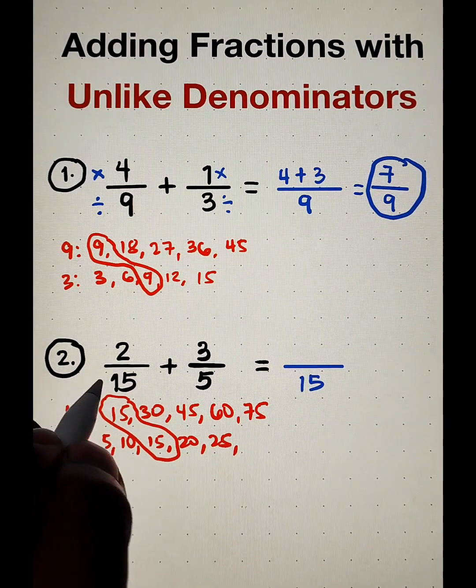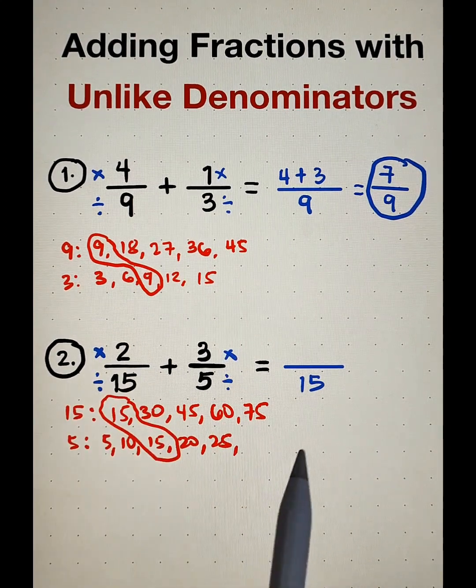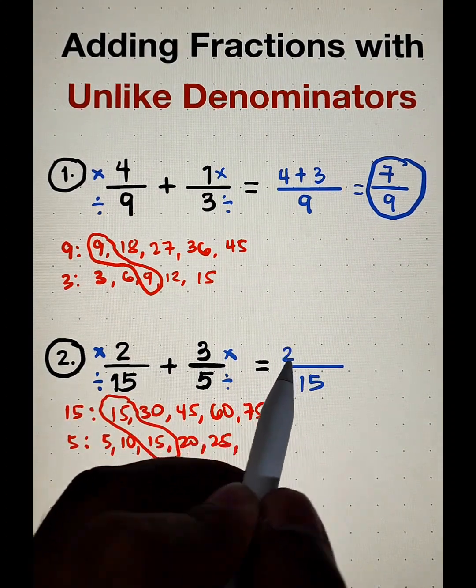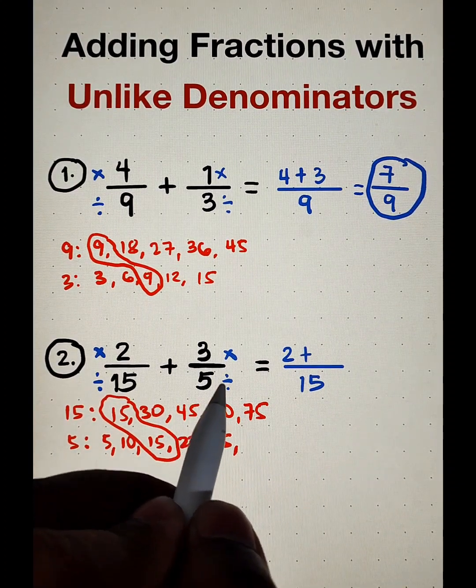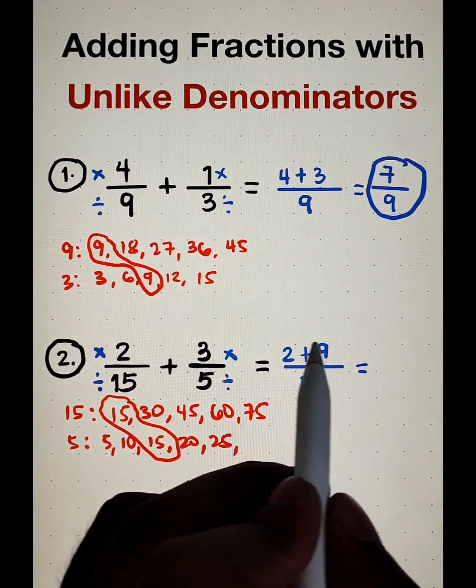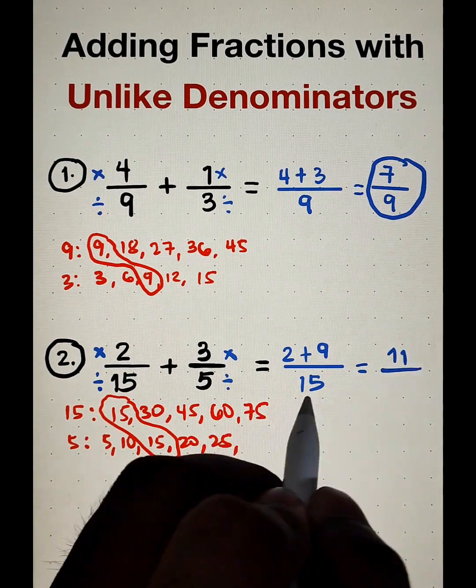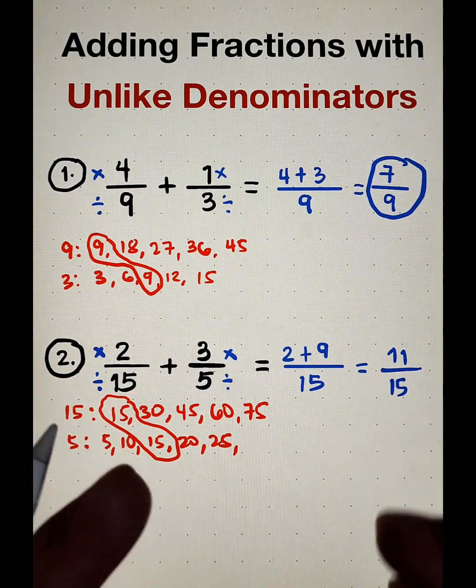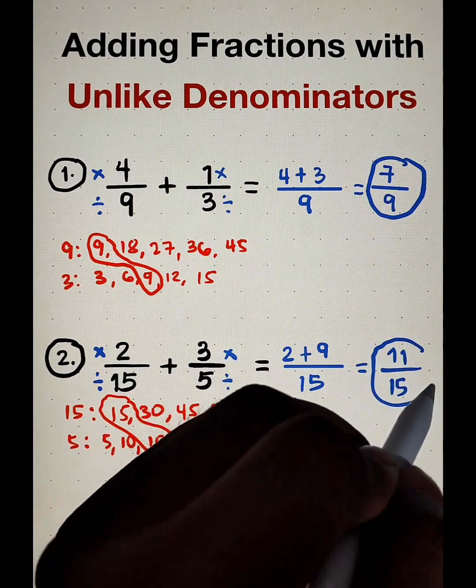And remember, divide, multiply, divide, multiply. 15 divided by 15 is 1 times 2, that is equal to 2 plus 15 divided by 5, that is 3, times 3, that is equal to 9. Add the numerators, 2 plus 9, which is equal to 11, then copy your 15. And 11 over 15 is already in simplified form. So this will serve as our final answer.